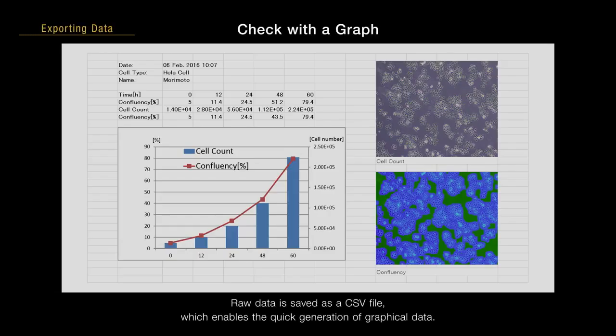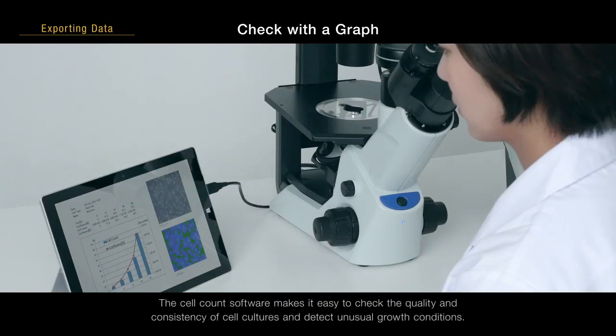Raw data is saved as a CSV file, which enables the quick generation of graphical data. The cell count software makes it easy to check the quality and consistency of cell cultures and detect unusual growth conditions.